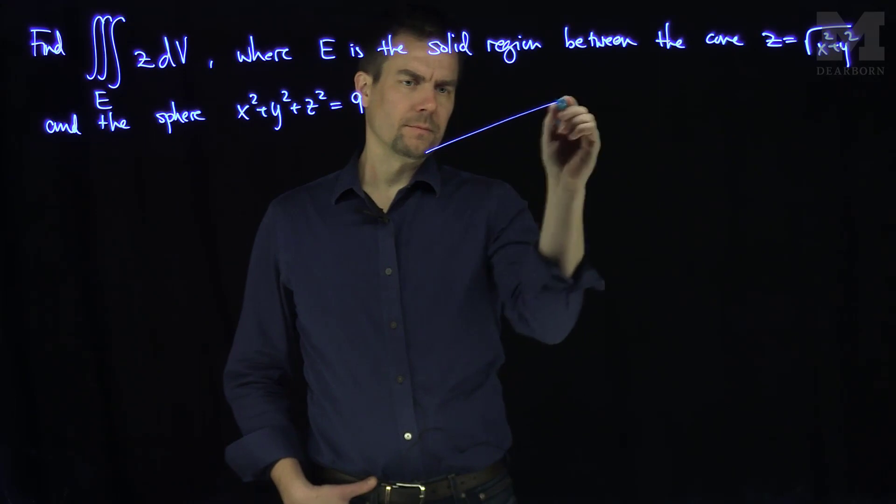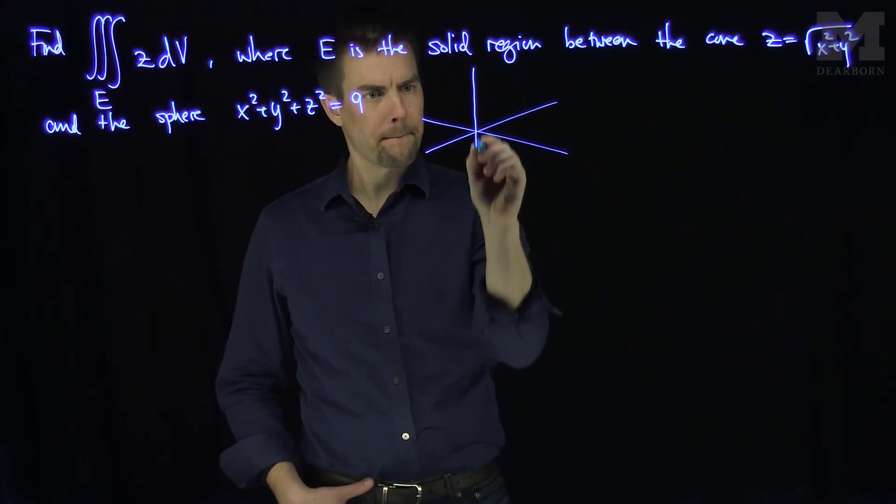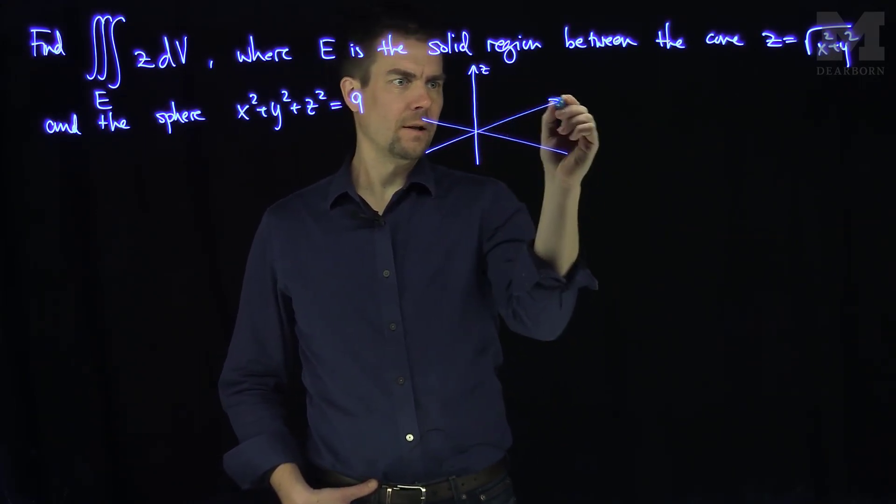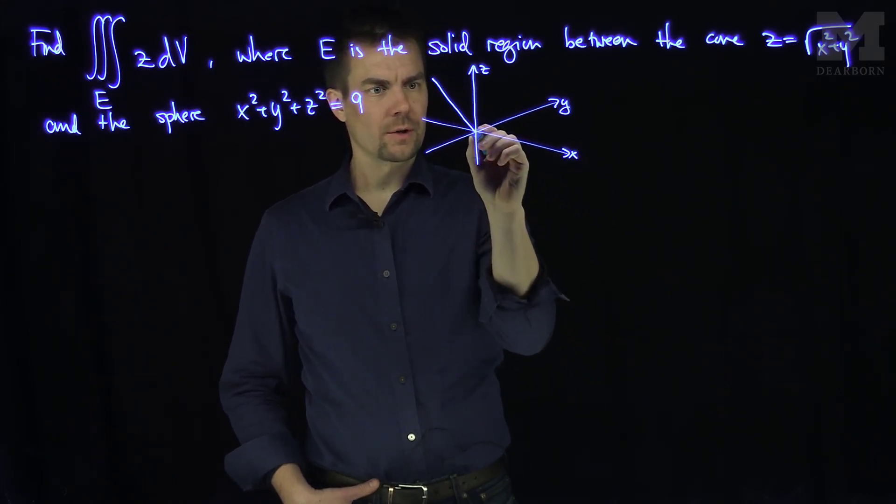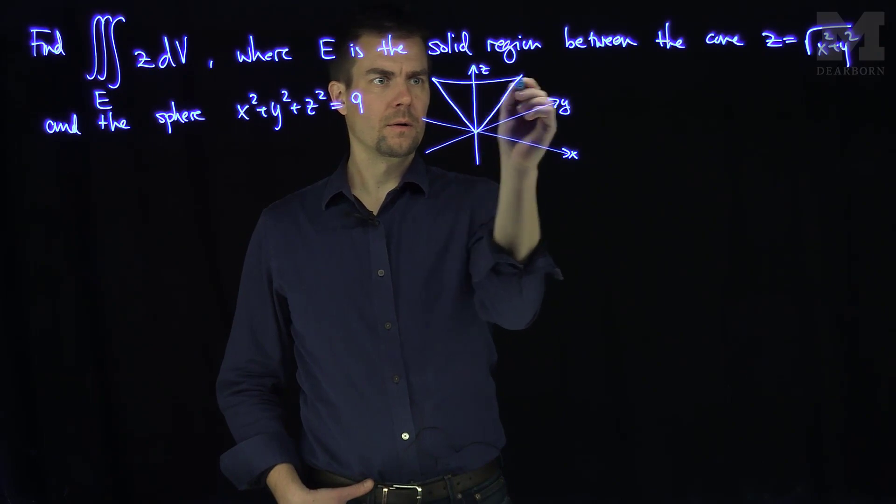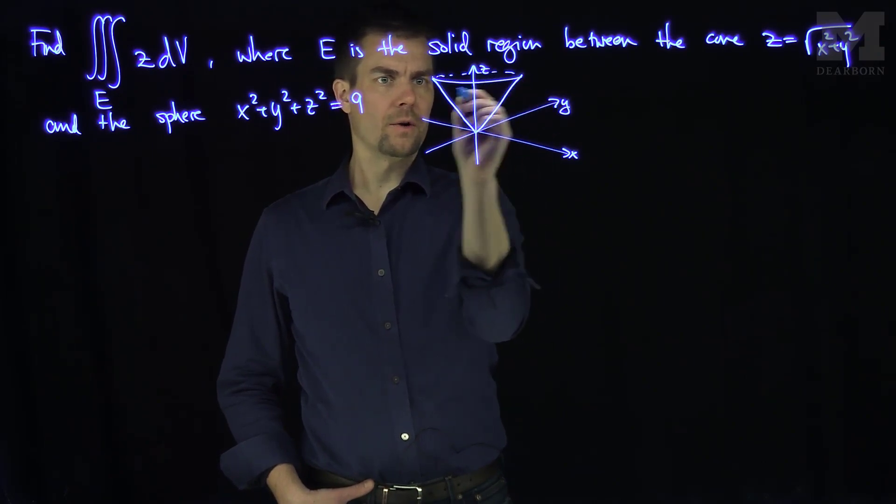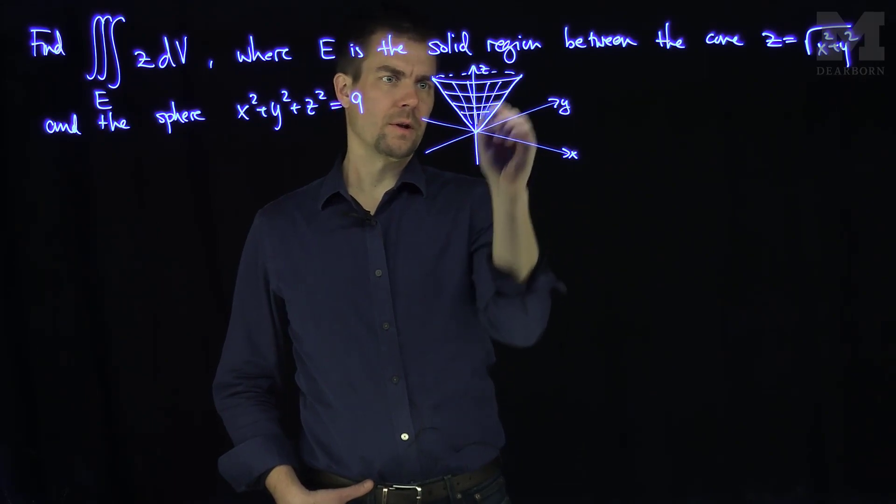So, let's sketch this region. There's Z, there's Y, and there's X. The cone is a right circular cone, so it looks like this. It makes a right angle. And all the cross sections are circles. So there's my cone. Those are straight lines over there.